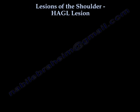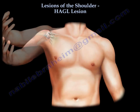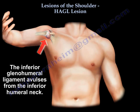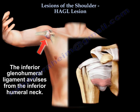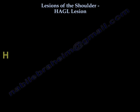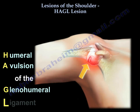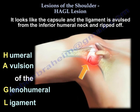Lesions of the shoulder: the HAGL lesion. The inferior glenohumeral ligament avulses from the inferior humeral neck. It is a humeral avulsion of the glenohumeral ligament. The capsule and the ligament avulse from the inferior humeral neck and are ripped off.